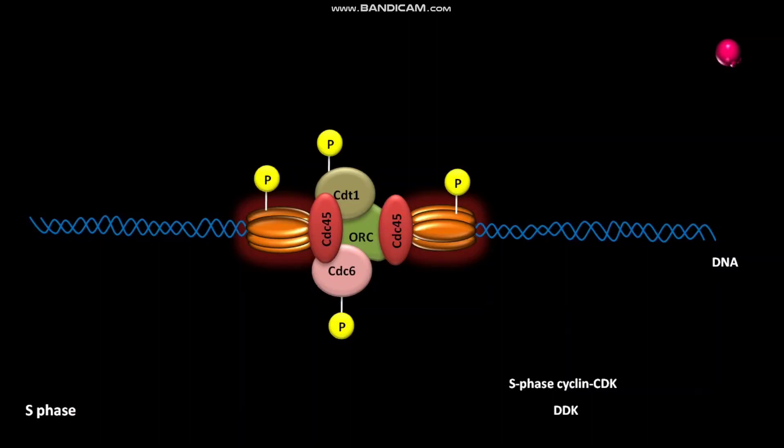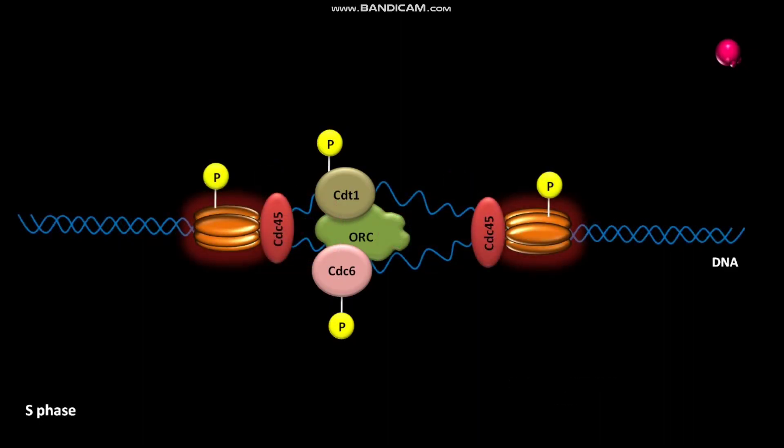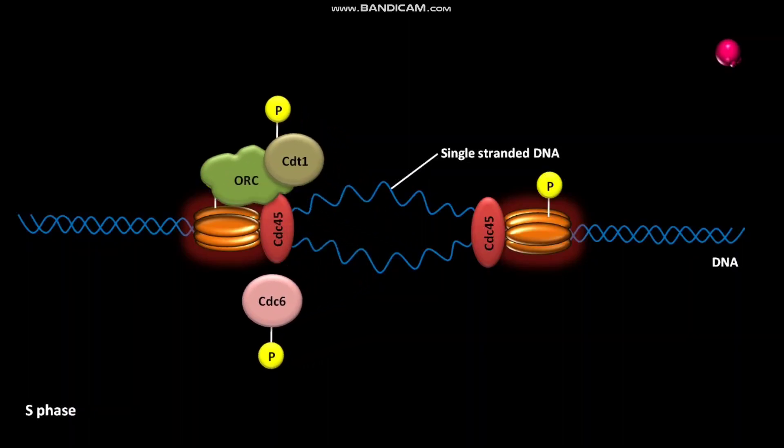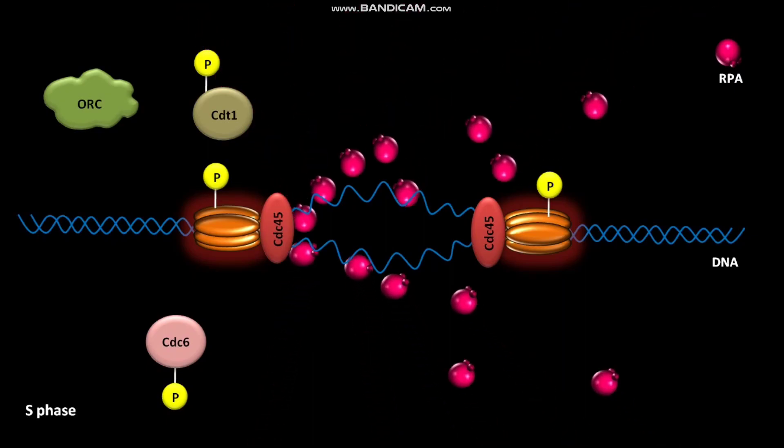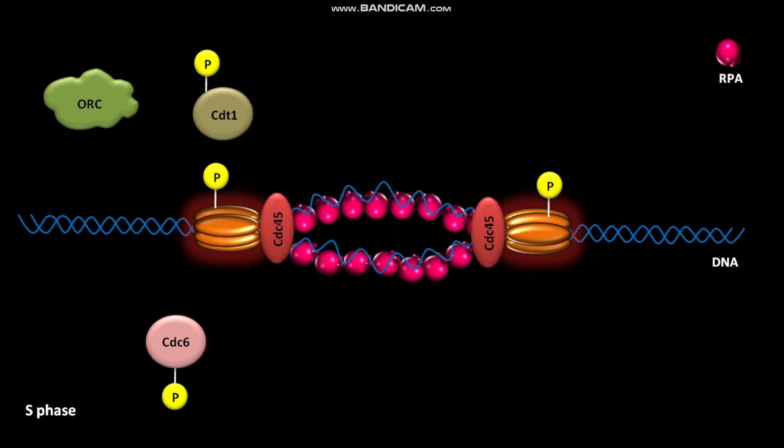The activated MCM helicases unwind the parental DNA strands, forming single-stranded DNAs. The phosphorylation of the pre-replication complex also leads to the release of phosphorylated Cdc6, phosphorylated CDT1, and unphosphorylated ORC.